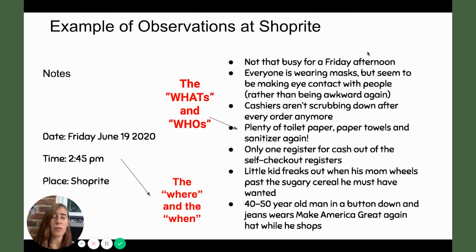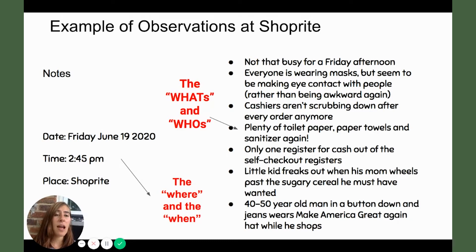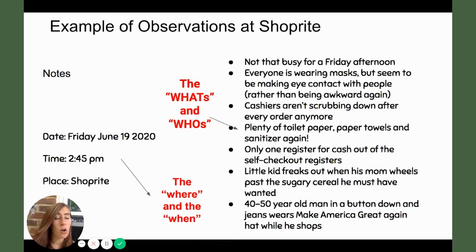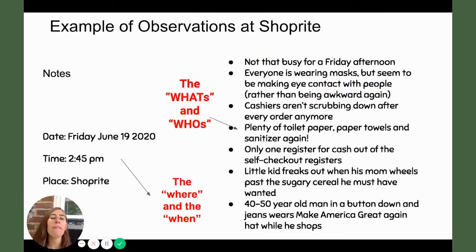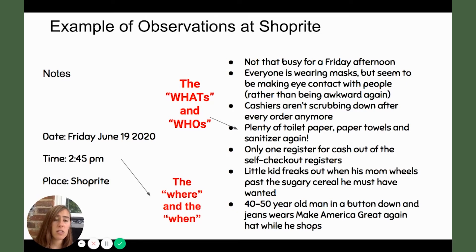Here are some of the notes I found. I noticed it really wasn't that busy for a Friday afternoon — usually when I go to ShopRite on a Friday after school it's crazy, but this time it wasn't. I also noticed that everyone was still wearing masks, but now people are starting to look at each other more. During quarantine people kind of wouldn't look at each other, afraid of the virus, but at ShopRite it was nice to see people actually making eye contact. I also noticed cashiers were starting to get lazy about scrubbing down the counters, which is something to be alert to since we're supposed to be really careful right now.